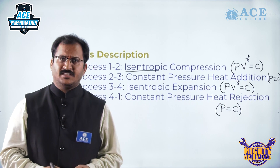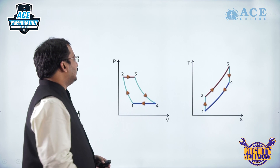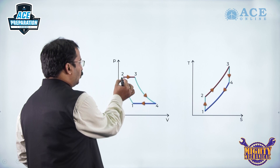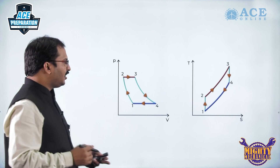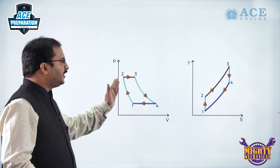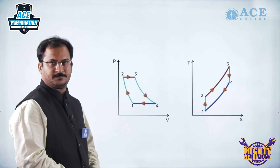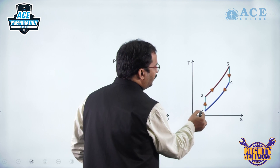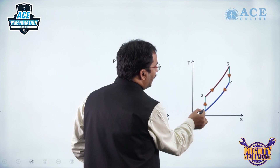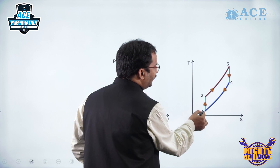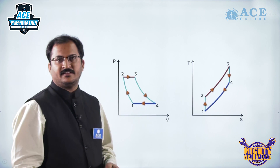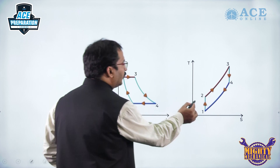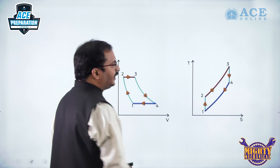Let us see the PV and TS diagrams. In the PV diagram you can observe that process 1 to 2 is undergoing compression where the volume is decreasing and pressure is increasing. The entropy remains constant during this compression process, and as a result it is represented as a vertical line in the TS diagram. As the pressure is increasing, temperature also increases, so it is pointing upwards.